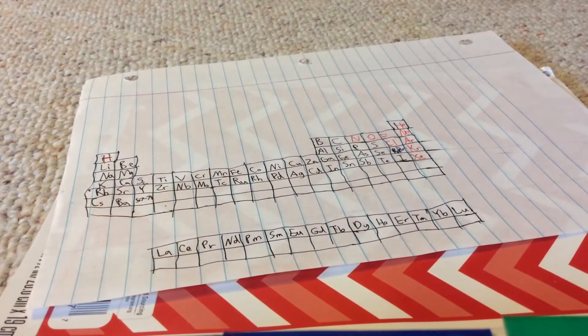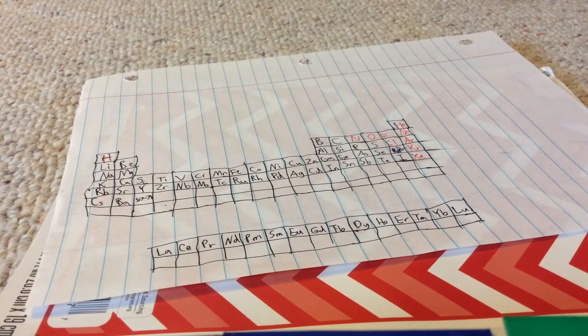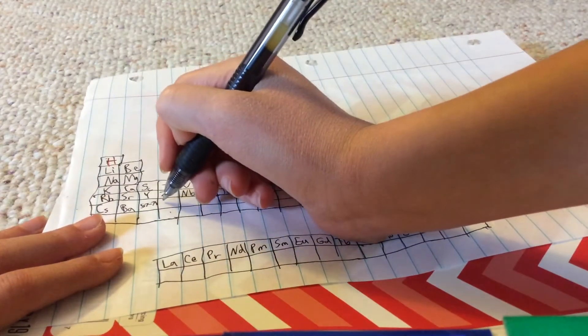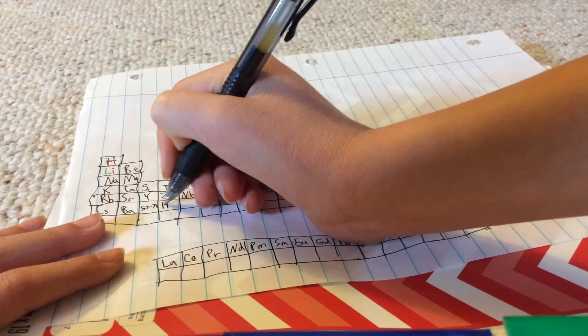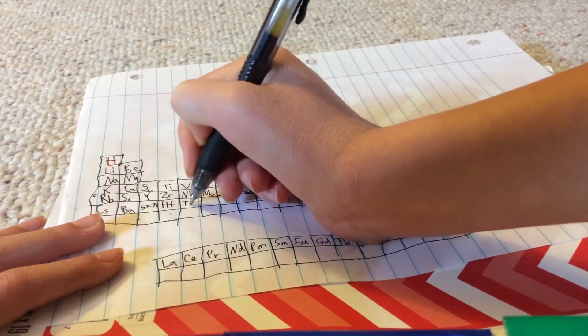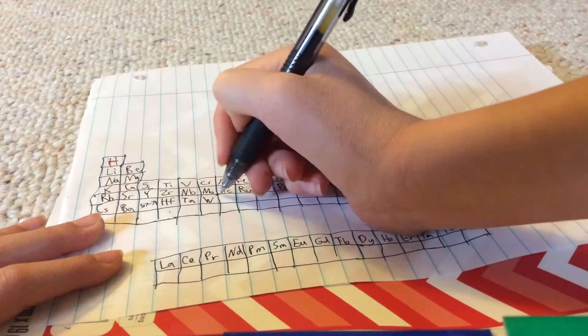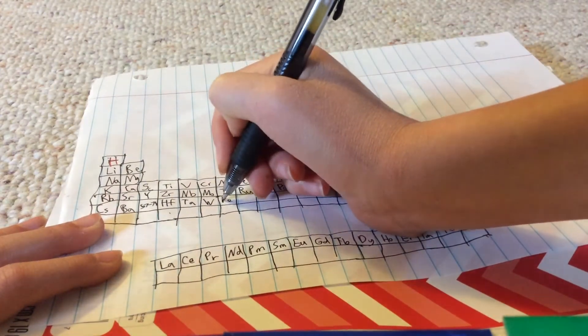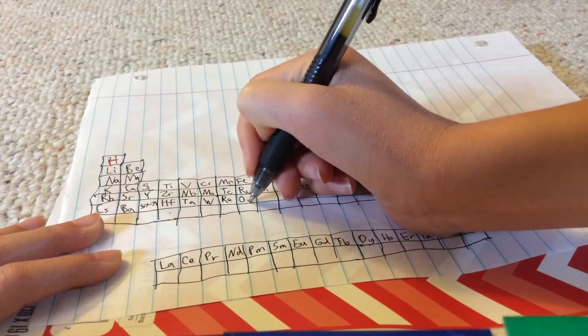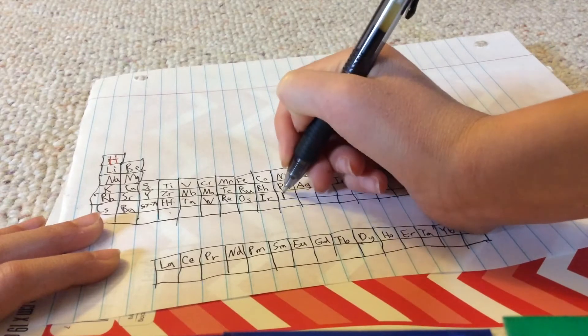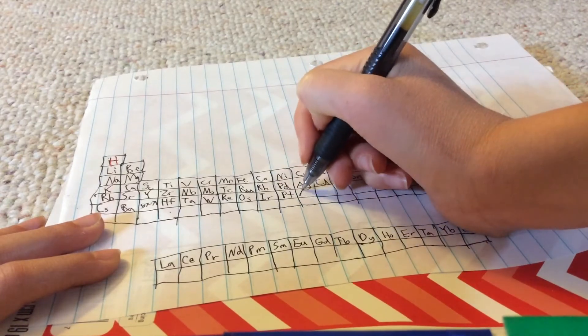Now we're right here, which is hafnium, tantalum, tungsten, rhenium, osmium, iridium, platinum, gold.